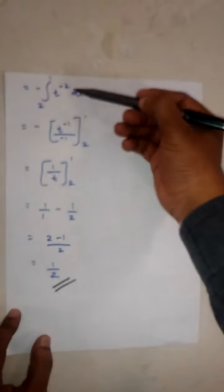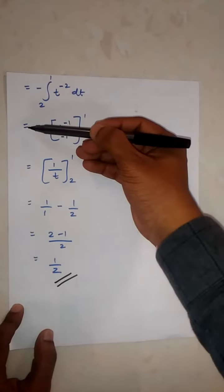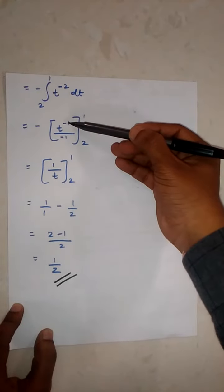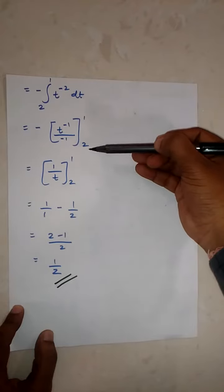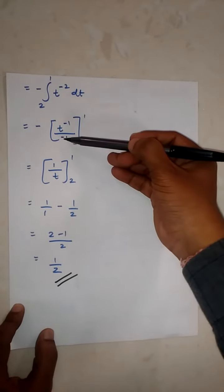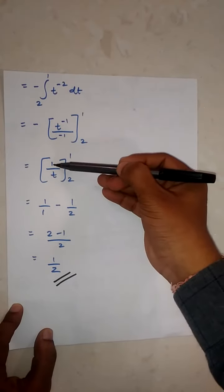With t² in the denominator, we have t^(-2), so the integral is negative t^(-2-1) over negative 1, with limits 1 and 2. The negatives cancel, giving us t^(-1), which is 1/t, evaluated from 1 to 2.